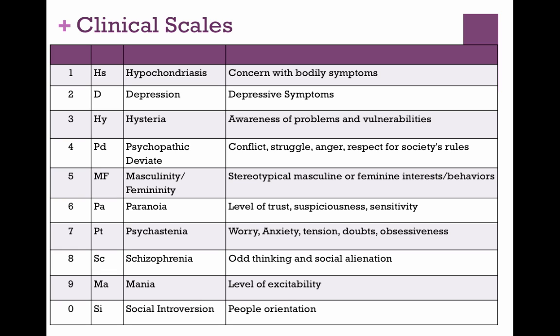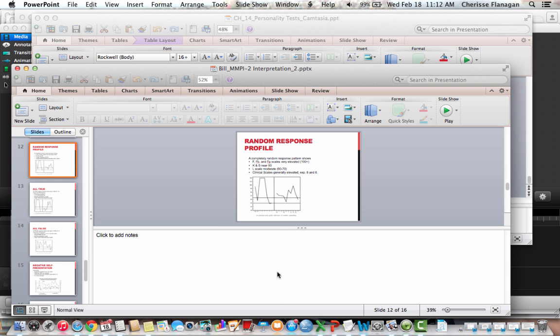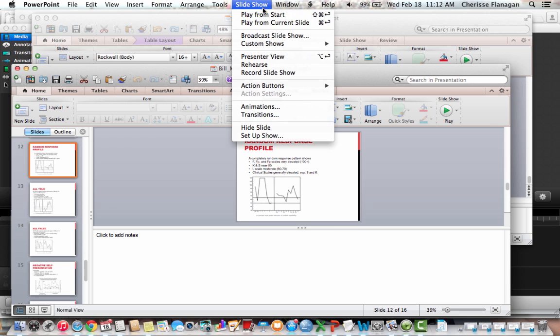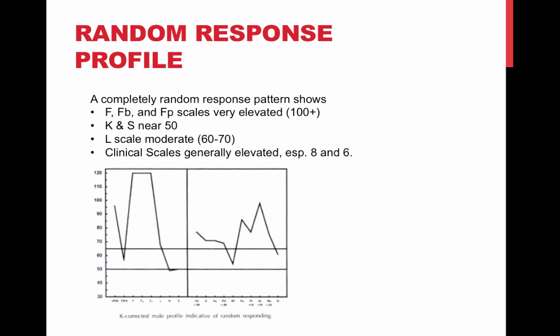So those are the basic clinical scales. I'm going to flip over to another set of slides to walk through how something like this might be interpreted. This first example is a completely random response period — this scale is invalid. If you see these two lines down here, going from 50 to 65, those are normal. Most of our responses would hopefully be within a T score of 50 and 65.